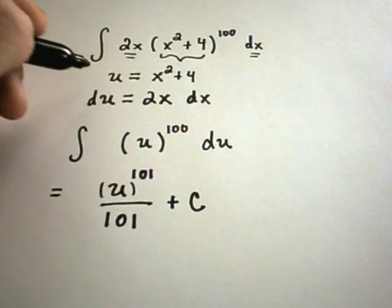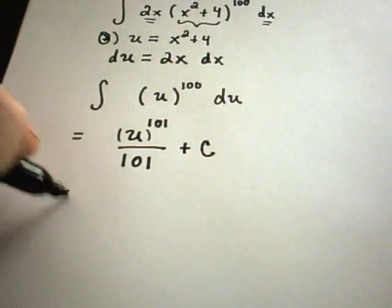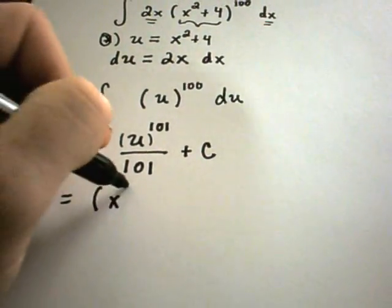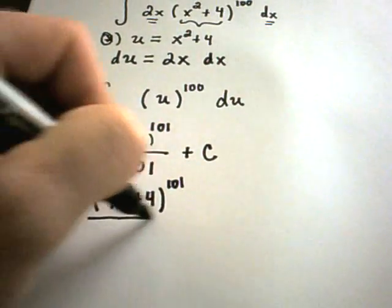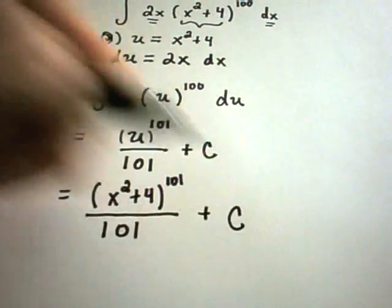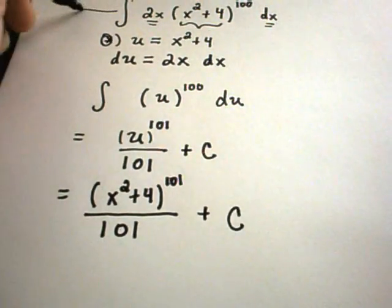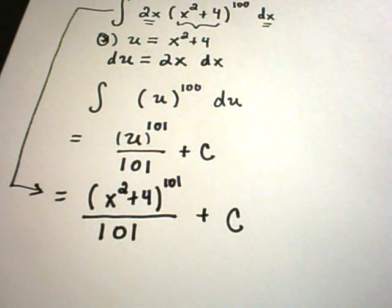And then the idea is, since you started with x's, you want to stop with x's. Right now we have u's. But simply just use your original substitution and plug that back in. So again, u is the same thing as x squared plus 4 raised to the 101 power, divided by 101, plus c. And that will be your antiderivative. So again, use substitution as just kind of a trick for relabeling things to make it look like a more basic problem.